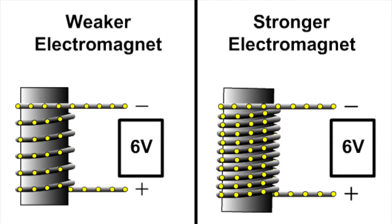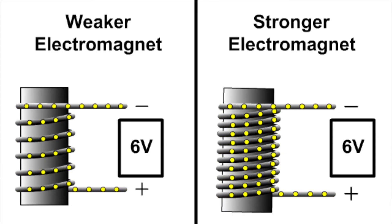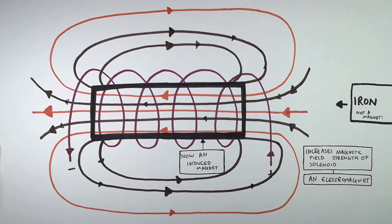You can also increase the magnetic field strength of the solenoid by increasing the number of coils. So if you increase the number of coils and increase the current, you can increase the strength of the magnetic field.